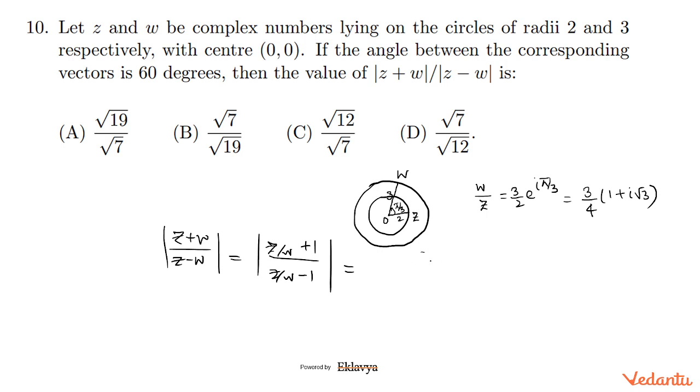7 + 3i√3, and z/w - 1 equals -1 + 3i√3. Taking the modulus of these, we get √(49+27) in the numerator and